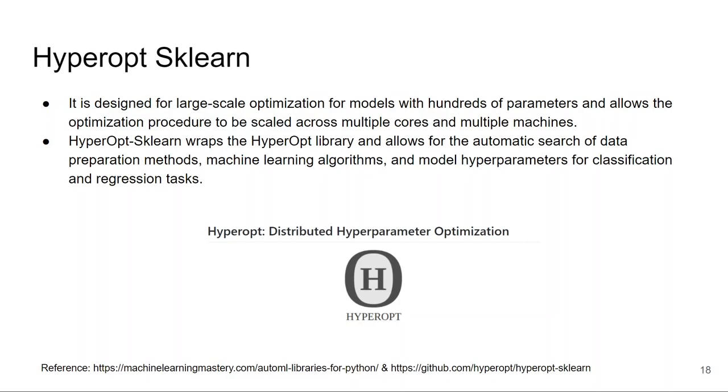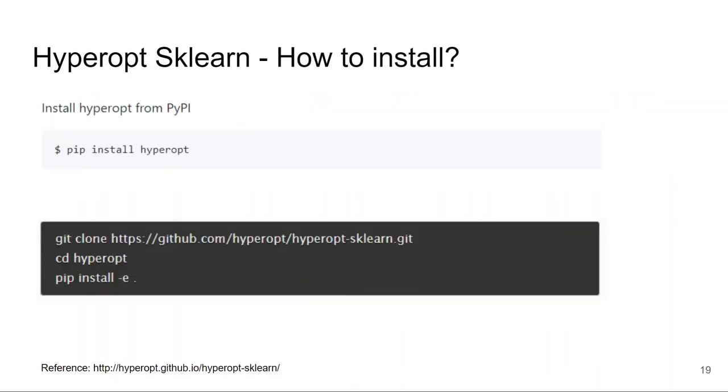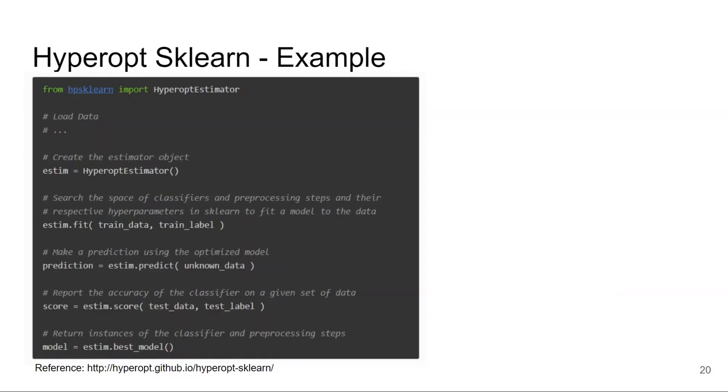Let's see how to install it. One of the dependencies for Hyperopt-sklearn is Hyperopt. You can install Hyperopt using pip install hyperopt, and for installing Hyperopt-sklearn, you can clone it from GitHub. Here is an example of Hyperopt-sklearn. You just have to create a Hyperopt estimator and call fit to train the model. This is very similar to other libraries as well.